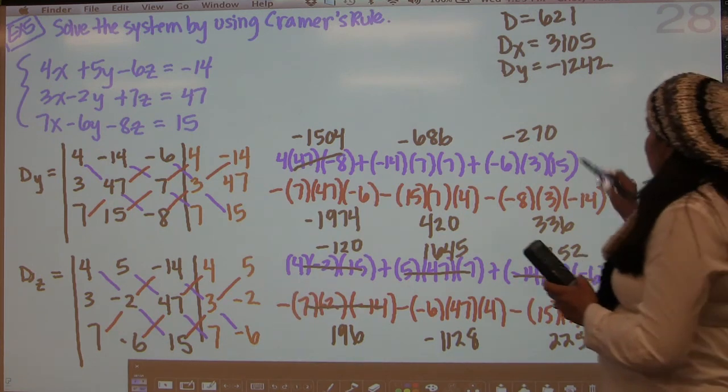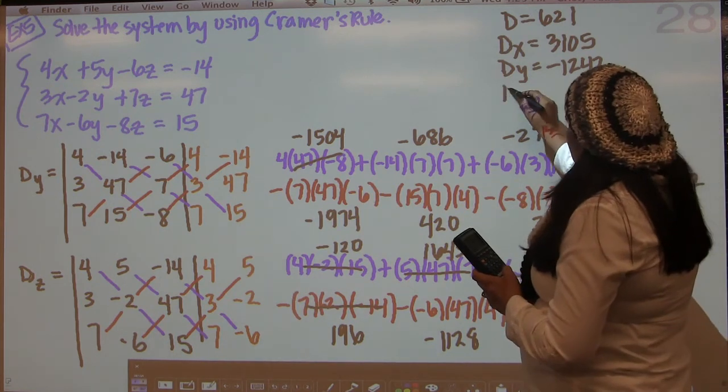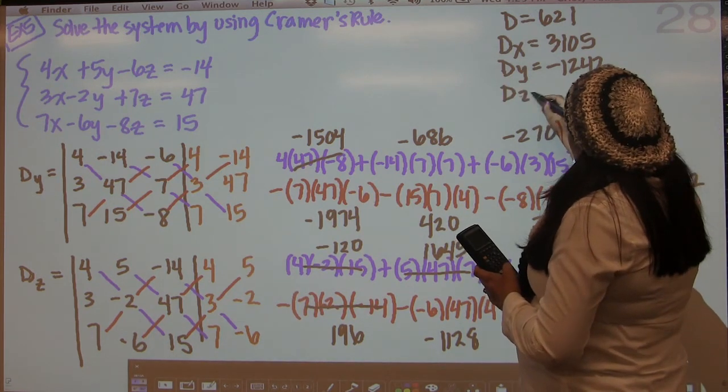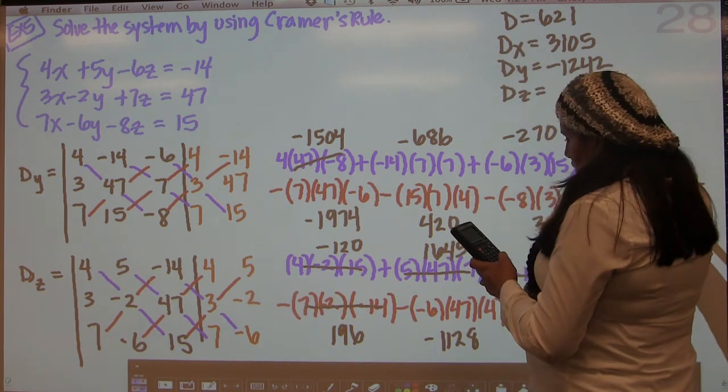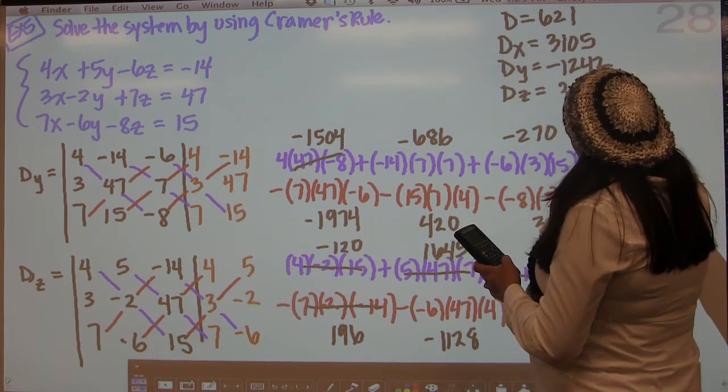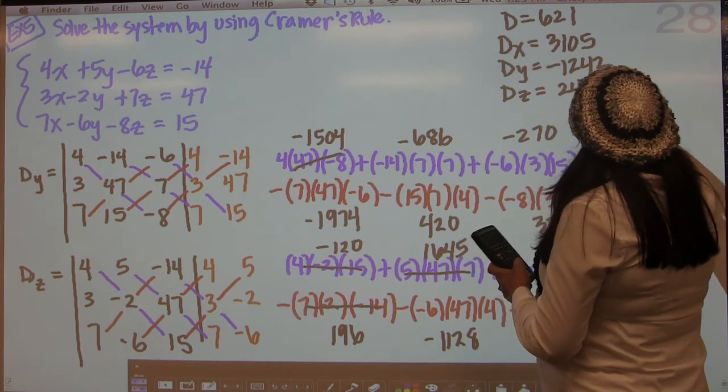So we're going to get negative 120 plus 1645 plus 252, minus 196, minus negative 1128, and then minus 225. And we get 2484. So dz is equal to 2484.